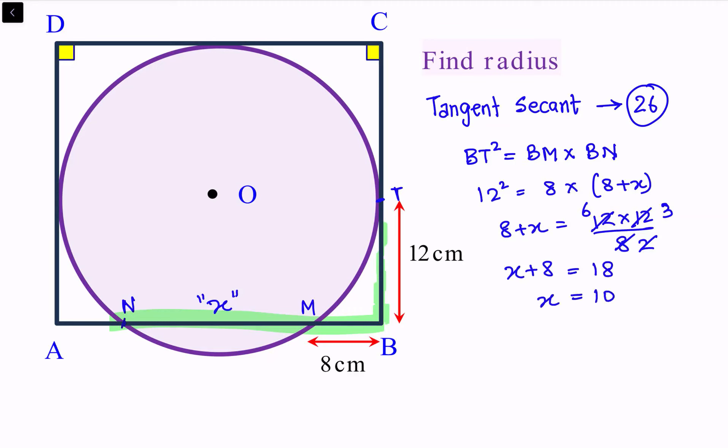So this MN length is nothing but 10 centimeters. And the length of AN by symmetricity is 8 centimeters. So this full length AB is nothing but 26 centimeters.